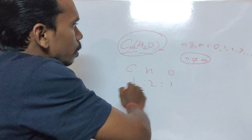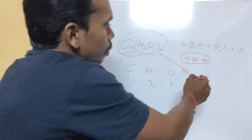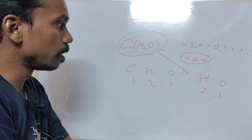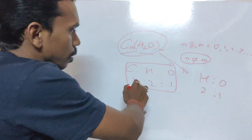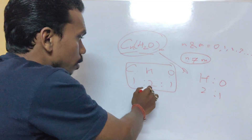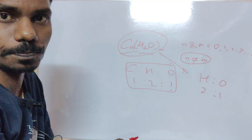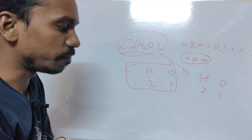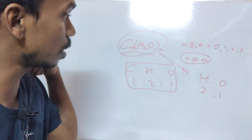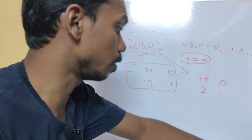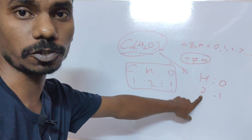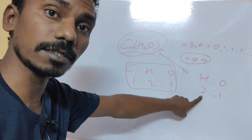In this definition, the ratio of hydrogen and oxygen will always remain as 2:1. Another definition says the number of carbon, hydrogen and oxygen will remain in a 1:2:1 ratio. But these are not the proper definitions of carbohydrates, because there are some compounds which follow this rule yet are not carbohydrates.